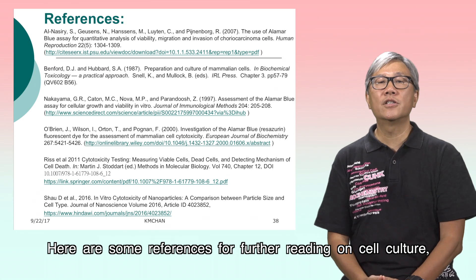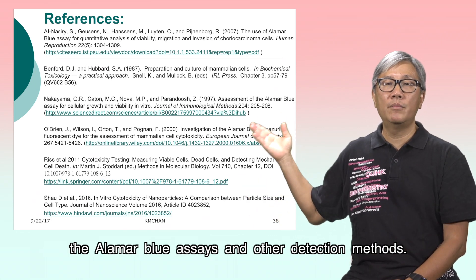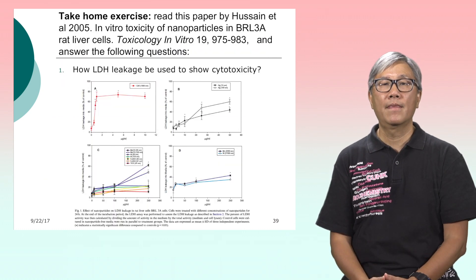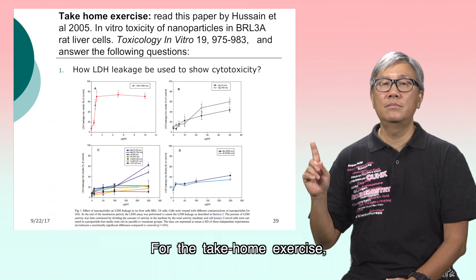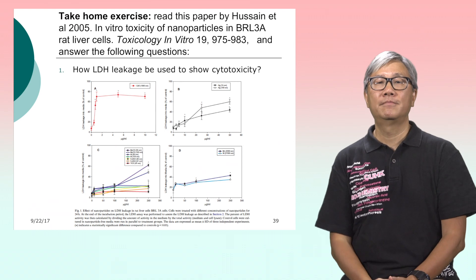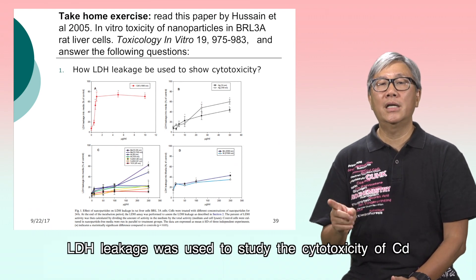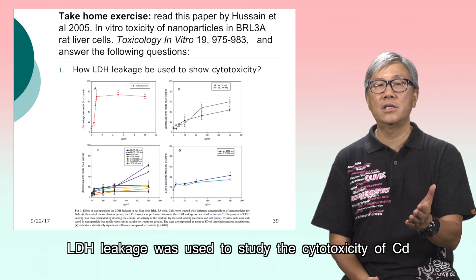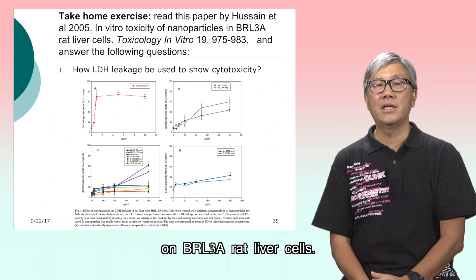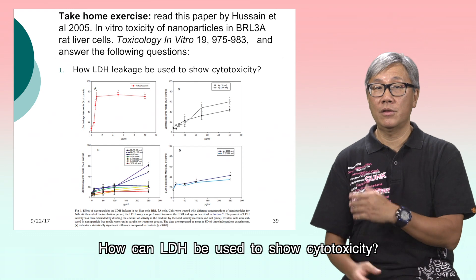Here are some references for further reading on cell culture, colorimetric assays, and other detection methods. For the take-home exercise, I have chosen a paper published in 2005. In this study, LDH leakage was used to study the cytotoxicity of cadmium on BRL3A rat liver cells. How can LDH be used to show cytotoxicity?